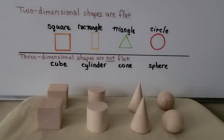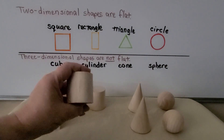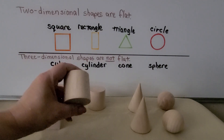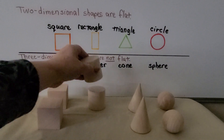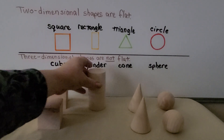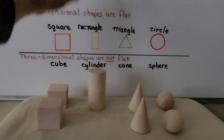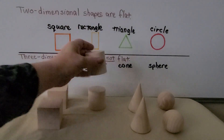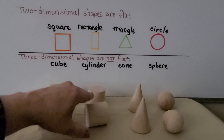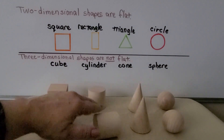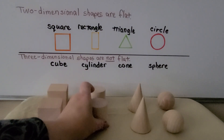This cylinder has a flat surface on the top and on the bottom. So we could stack them and make a tower with the cylinders. And a cylinder can roll because it's got a curved surface on its side.